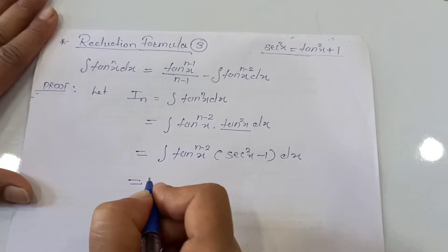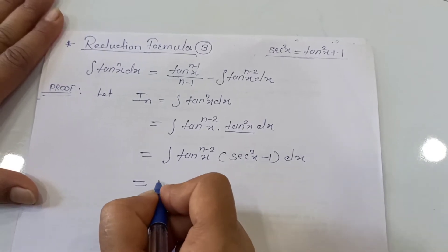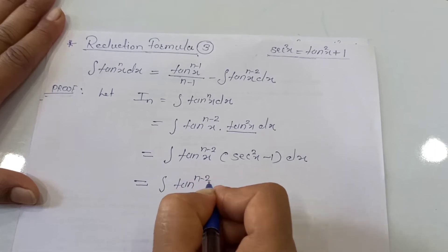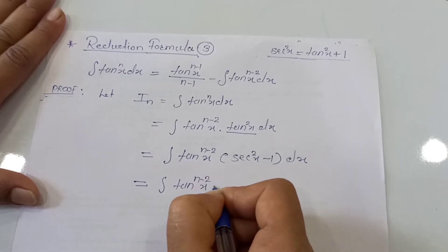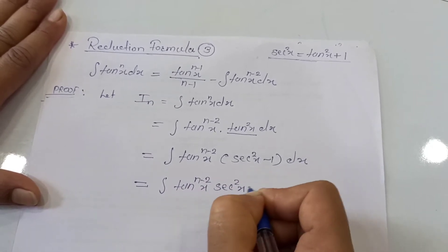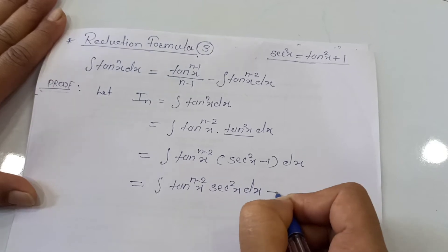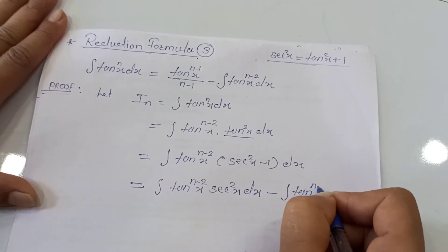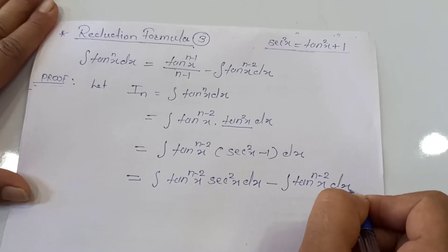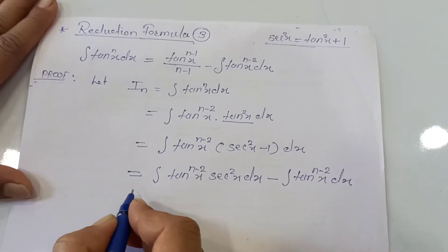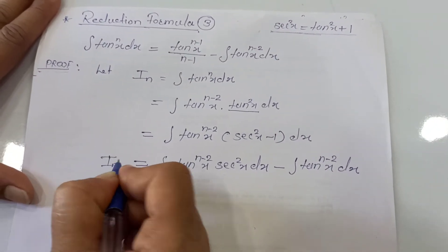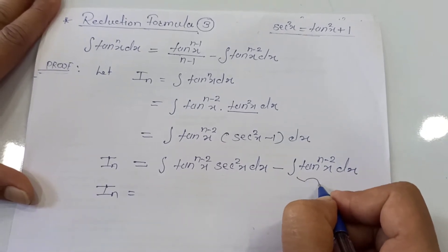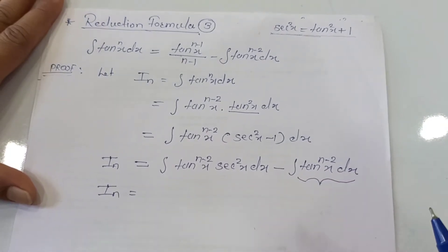Now open the brackets and separate the integration sign. This gives: the integration of tan raised to n minus 2 times x times sec squared x dx, minus the integration of tan raised to n minus 2 times x dx. On the left side we have I_n, so write it down and express the second integral using notation.